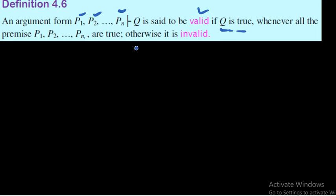We may sometimes accept a false statement as a premise. During an argument, the premise is taken as true from the beginning. Considering the premises as true, if the conclusion also becomes true, we can say the argument is valid and acceptable. Let us see by examples.